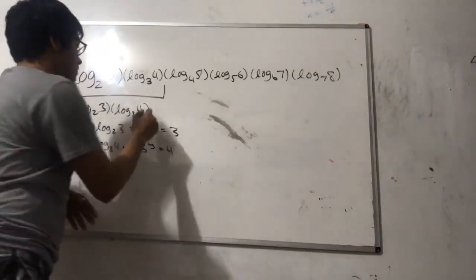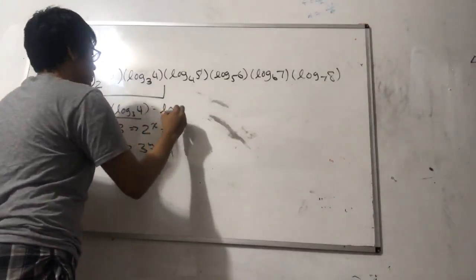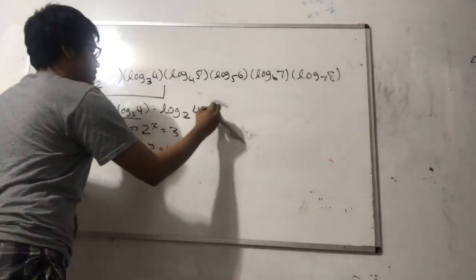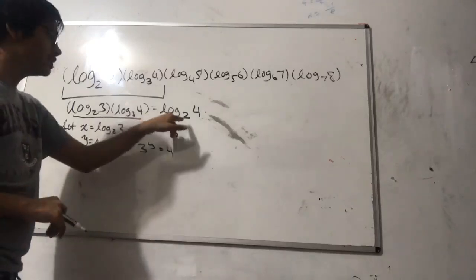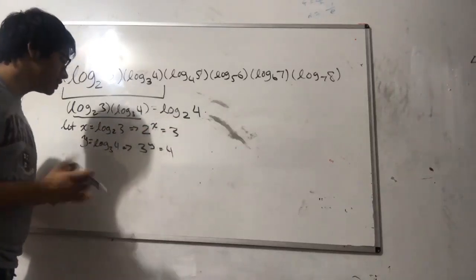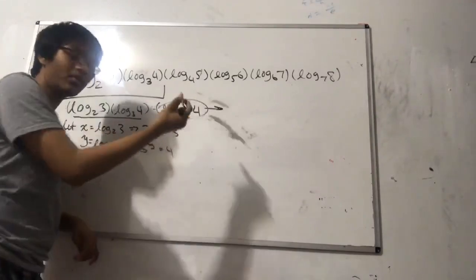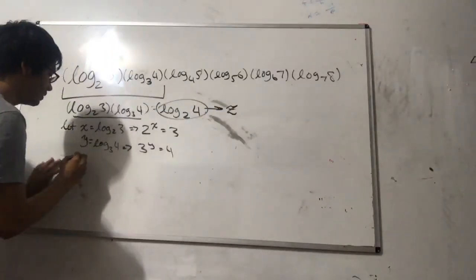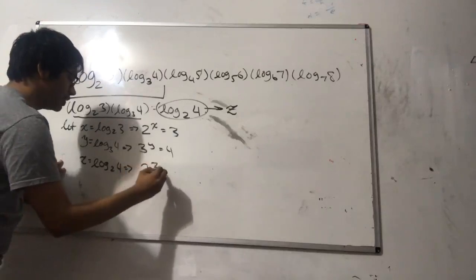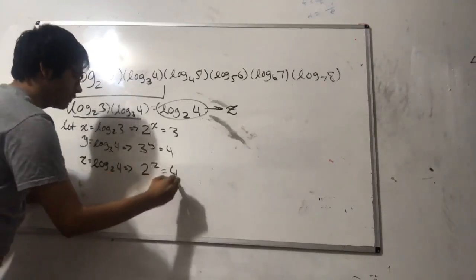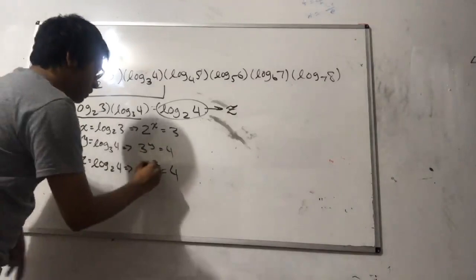What I want to show is that log base 2 of 3 times log base 3 of 4 is equal to log base 2 of 4, which is just 2. Let's assign log base 2 of 4 to a variable z, so z equals log base 2 of 4, meaning 2 to the z equals 4. So we have: 2 to the x equals 3, 3 to the y equals 4, and 2 to the z equals 4.